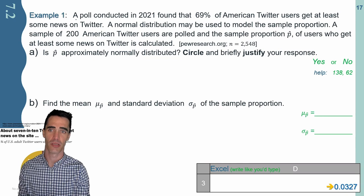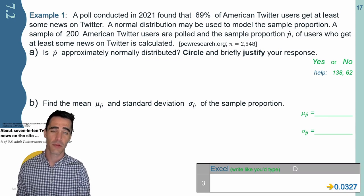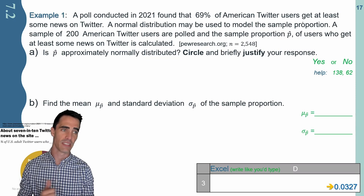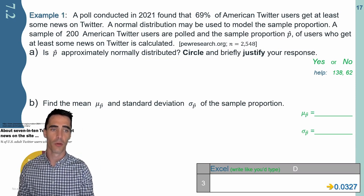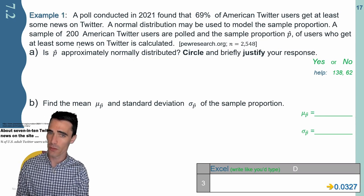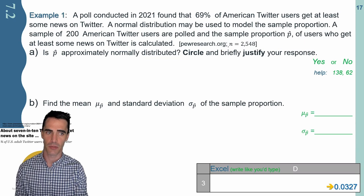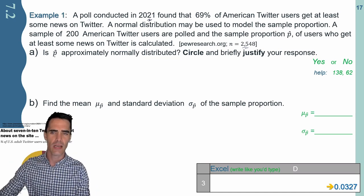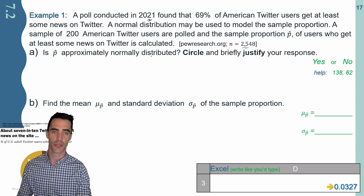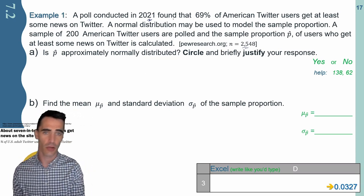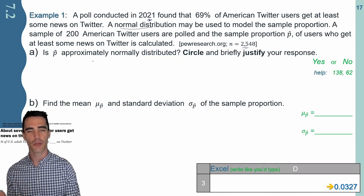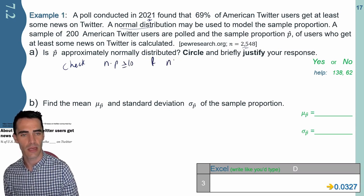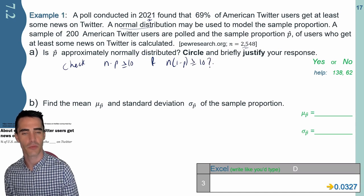Here's an example. A poll conducted in 2021 found that 69% of American Twitter users get at least some news on Twitter. A sample of 200 American Twitter users are polled and the sample proportion p-hat is calculated. This roughly 69% is actually pulled from Pew Research. Our first question: is p-hat approximately normally distributed? That's where we get to the central limit theorem. We should do our due diligence and check the two conditions: n times p has to be greater than or equal to 10, and n times one minus p has to be greater than or equal to 10.